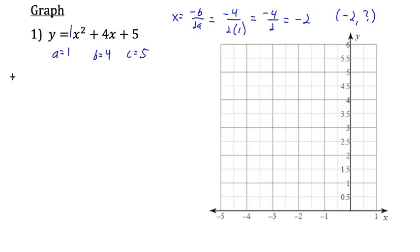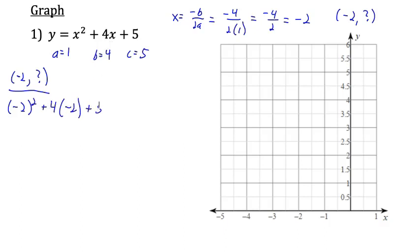Let's figure out that y so we can get the vertex on our graph. I'm going to substitute negative 2 into this equation for x. So I have negative 2 squared plus 4 times negative 2 plus 5. Negative 2 to the second power is 4. 4 times negative 2 is negative 8, and we still have the plus 5. 4 minus 8 is negative 4, and negative 4 plus 5 equals 1. So the vertex of this parabola is at negative 2, 1.